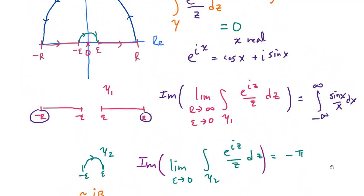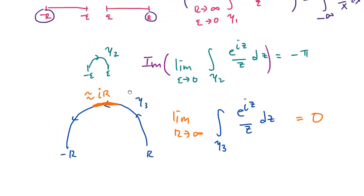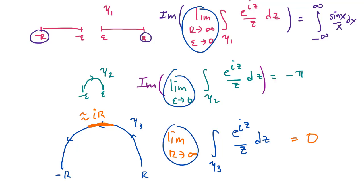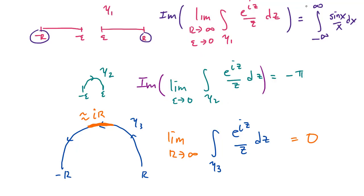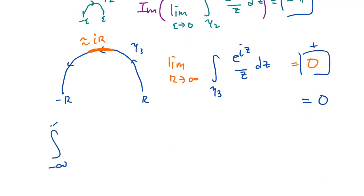Assuming all of this, we are basically done. By Cauchy's theorem, the integral along the entire path gamma is 0. Splitting gamma into gamma 1 plus gamma 2 plus gamma 3, and taking the limit as r goes to infinity and epsilon goes to 0, and taking the imaginary part, the sum of all contributions must equal 0. This exactly implies that the integral from negative infinity to infinity of sine x over x dx must be pi. And this indeed turns out to be the correct answer.